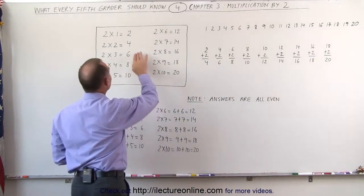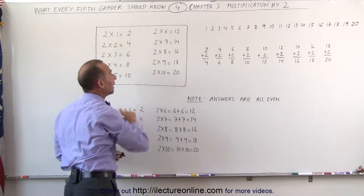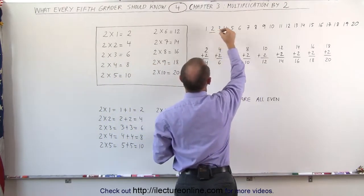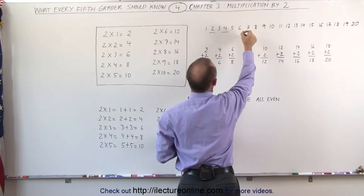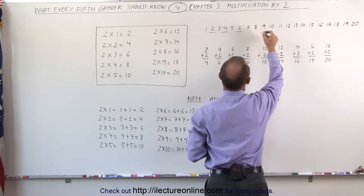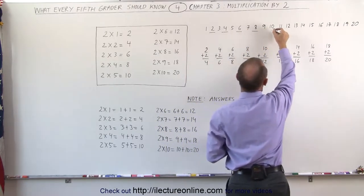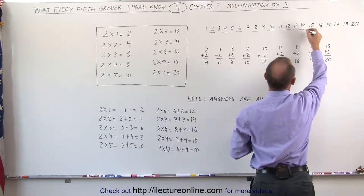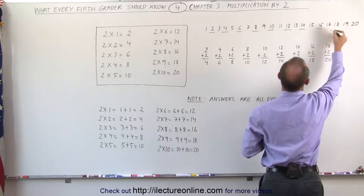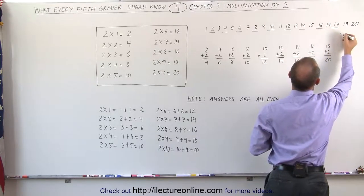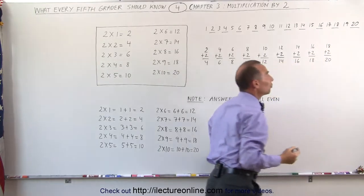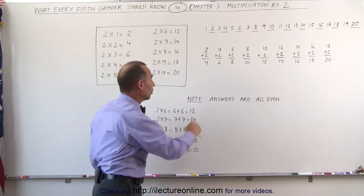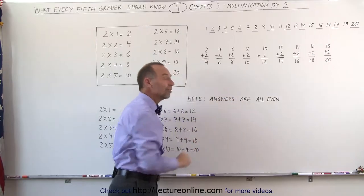The answer to the multiplication table when we multiply by 2 is always the even number. So 1 times 2, or 2 times 1, is equal to 2, 2 times 2 is equal to 4, 2 times 3 is equal to 6, 2 times 4 is equal to 8, 2 times 5 is equal to 10, 2 times 6 is 12, 2 times 7 is 14, 2 times 8 is 16, 2 times 9 is 18, and 2 times 10 is 20. So recognize it's every other number. All the even numbers are the answers. Note, the answers are always even.